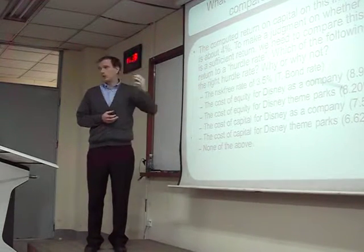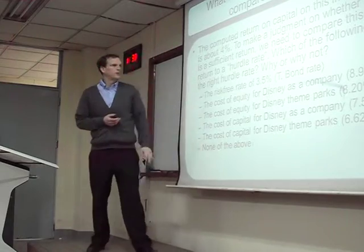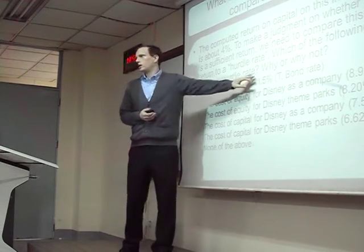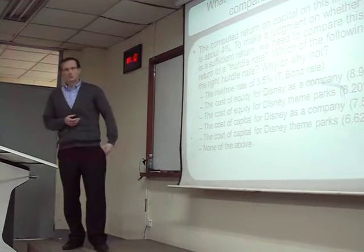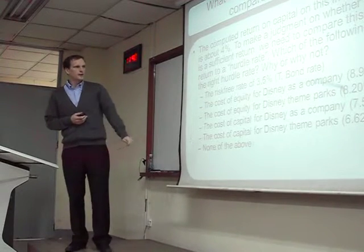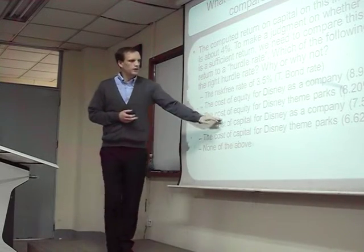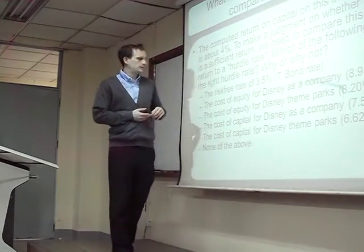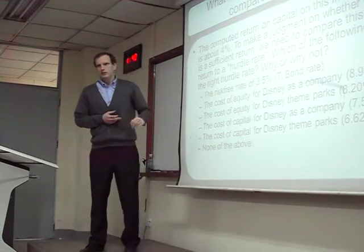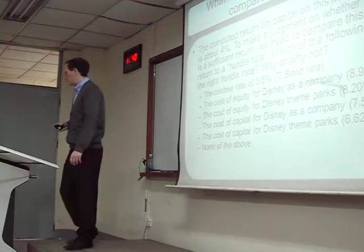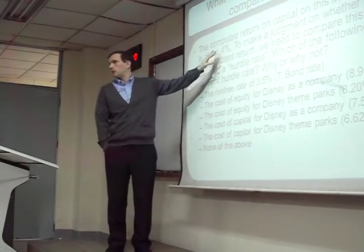To make a judgment about whether this is a good return or a bad return, we need to compare it to a hurdle rate. Which of the following is the right hurdle rate? The risk-free rate — let's say it was 2009, it was 3.5%. The cost of equity for Disney as a company was 8.9%. The cost of equity for Disney theme parks was 8.2%. The cost of capital for Disney as a company, or the cost of capital for Disney theme parks — or none of the above. We figured out we are going to make a profit of about 4% a year. What should we compare this to when deciding to make the investment?